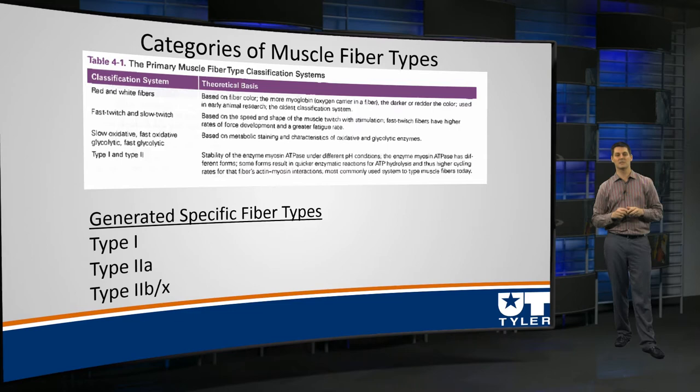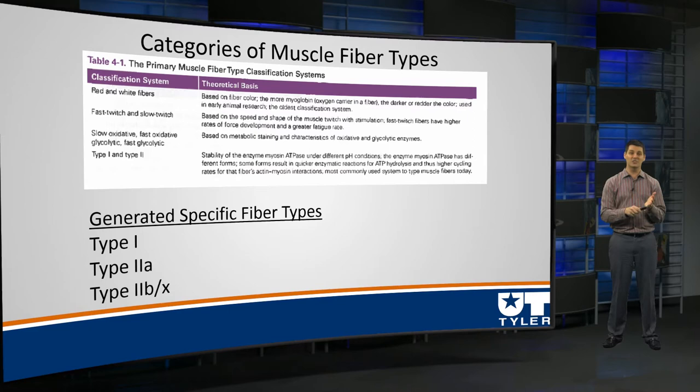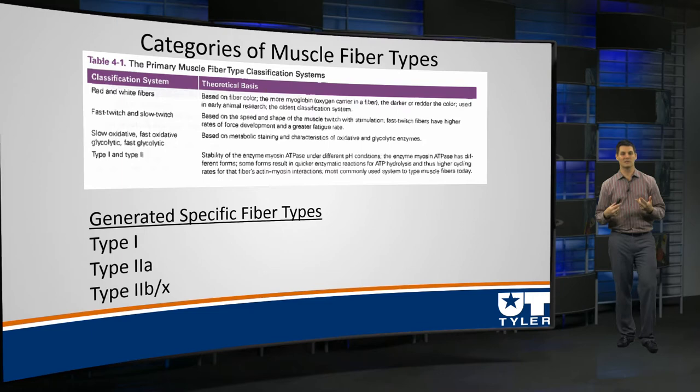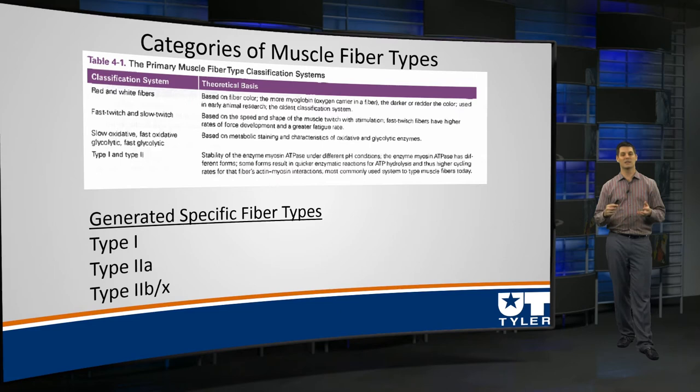Type 1 fibers are our slow oxidative: slow twitch, highly oxidative, and red in color. Our next type is 2A, the intermediate — pinkish, relatively high in oxidative metabolism but still requiring quite a bit of glycolysis as well, hence fast oxidative glycolytic, with a fast twitch speed. And last but not least is the type 2B or X fibers: the whitest fibers, relying heavily on glycolytic pathways, and capable of twitching really, really fast.